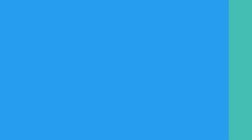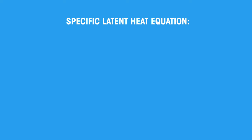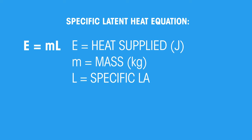Now let's have a look at the maths. To calculate specific latent heat, we use this equation. This formula can be rearranged. The units of specific latent heat are joules over kilograms.